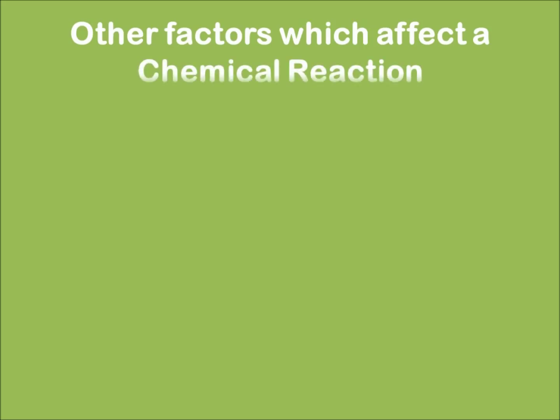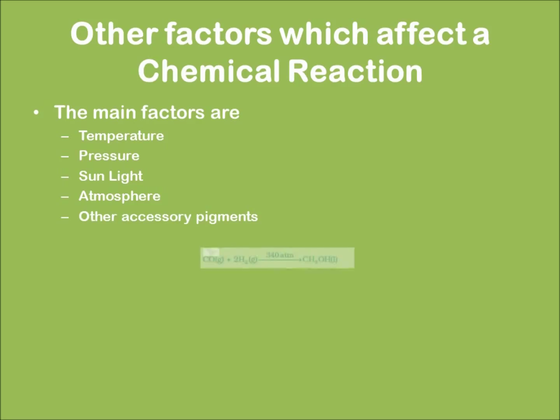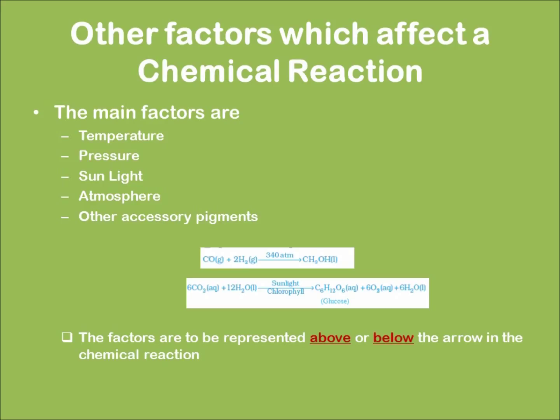Now let's learn about the factors which actually affect a chemical reaction. The main factors that affect a chemical reaction are temperature, pressure, sunlight, the atmosphere around, and other accessory pigments. Given below are two equations which represent in them the factors which actually affect them. We have to note that the factors which affect the chemical reaction must be denoted above or below the arrow in the chemical equation.